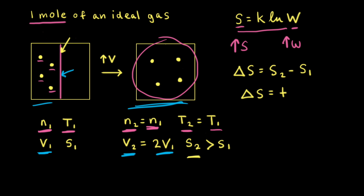Thinking about the change in entropy delta S — if S2 is greater than S1, then S2 minus S1 would be a positive value. Therefore, the change in entropy for the free expansion of a gas when the temperature is constant is positive.